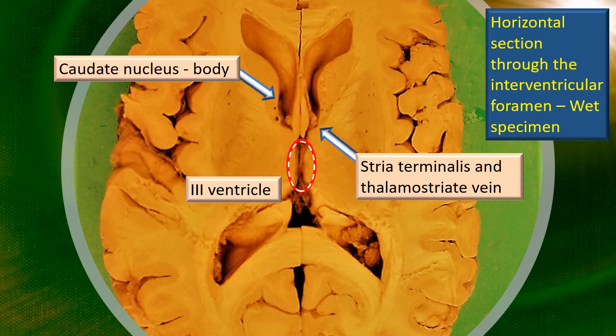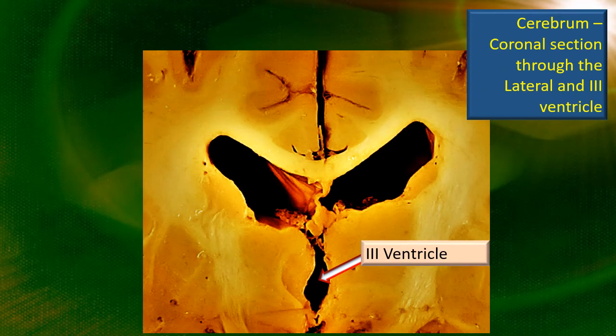The third ventricle has been highlighted and you can see supralaterally the body of the lateral ventricle. You can also see the fornix and the septum pellucidum right in the midline.